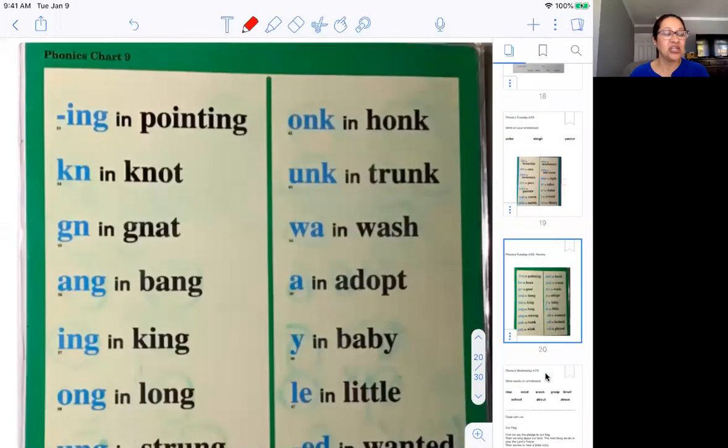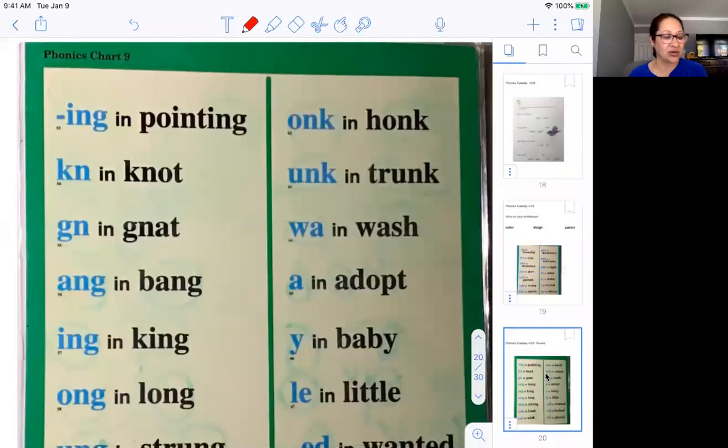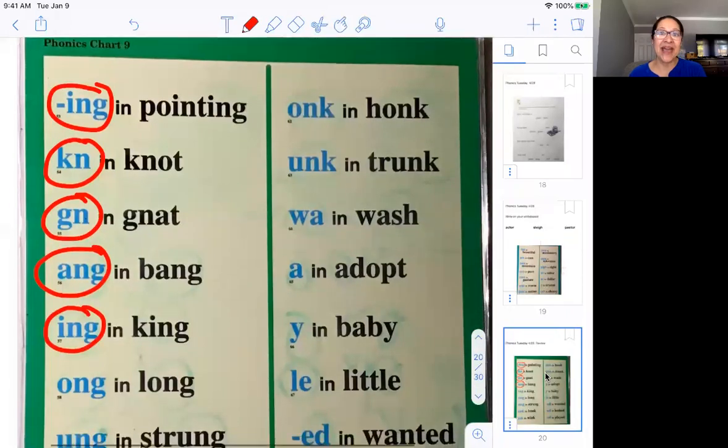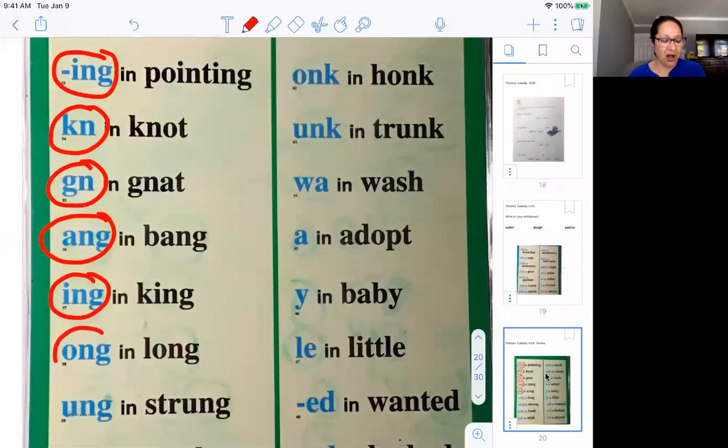Here we go on to the next chart. This is chart nine, boys and girls. Ng in pointing, I-N-G. Kn in knot, K-N. Gn in gnat, G-N. Ng in bang, N-G. Ng in king, I-N-G. Ong in long, O-N-G. Ung in strung, U-N-G.